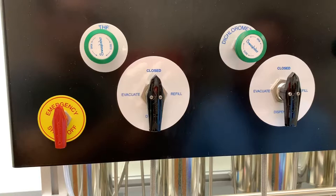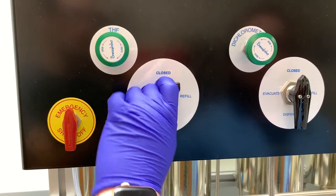For each solvent, you'll have a valve with four possible positions: closed, refill, dispense, and evacuate. Refill will give you nitrogen gas, dispense will allow the solvent to come squirting out, and evacuate gives you vacuum, though we won't be using that function here.